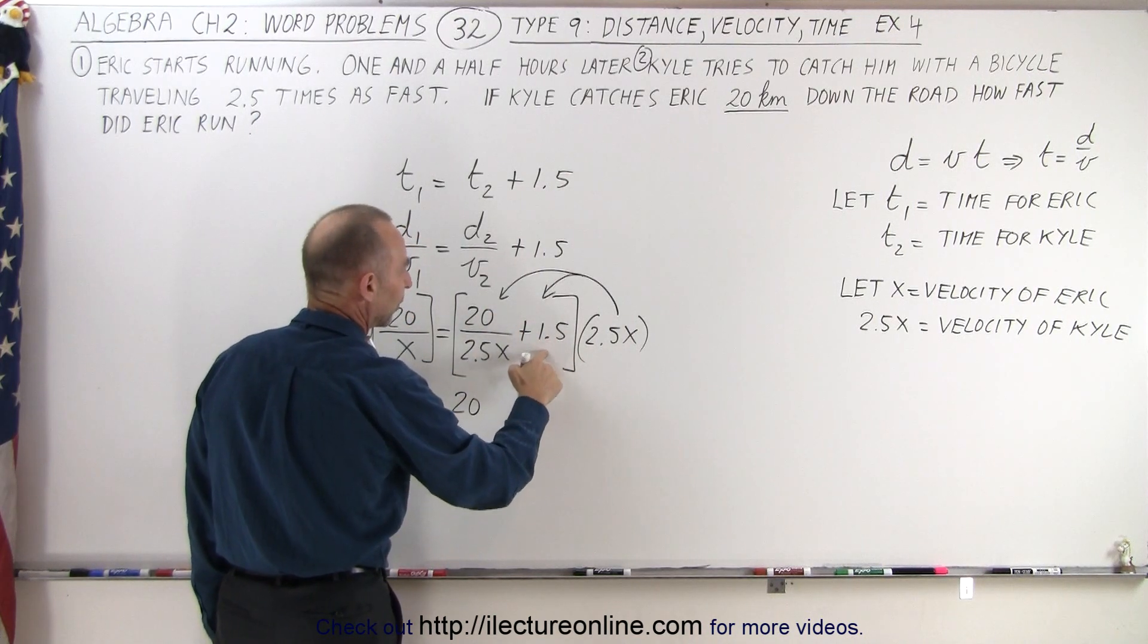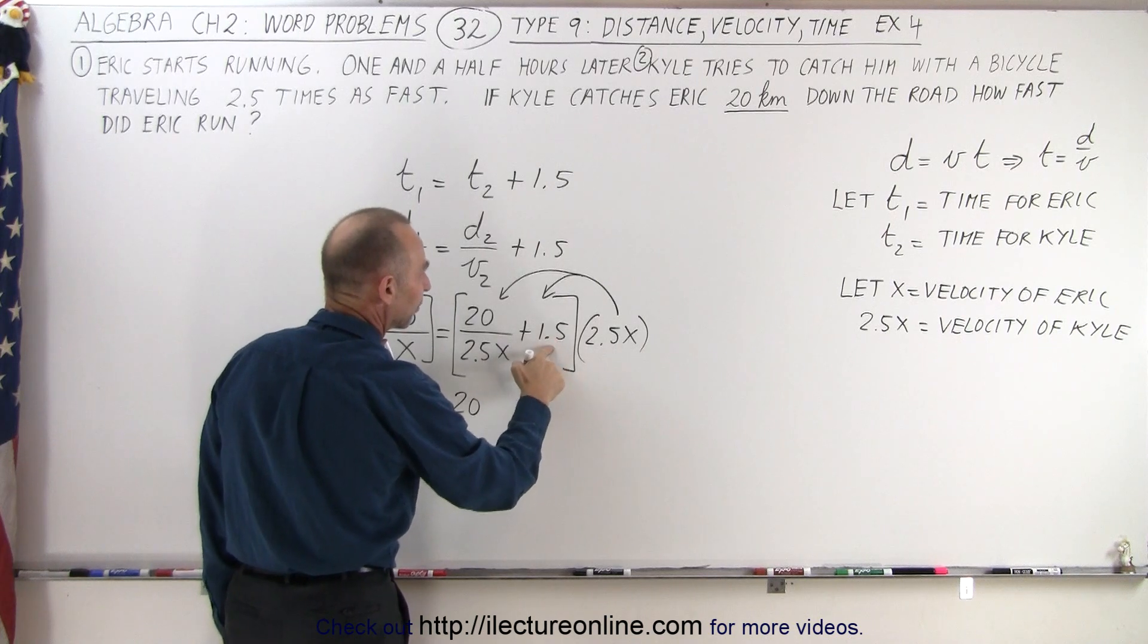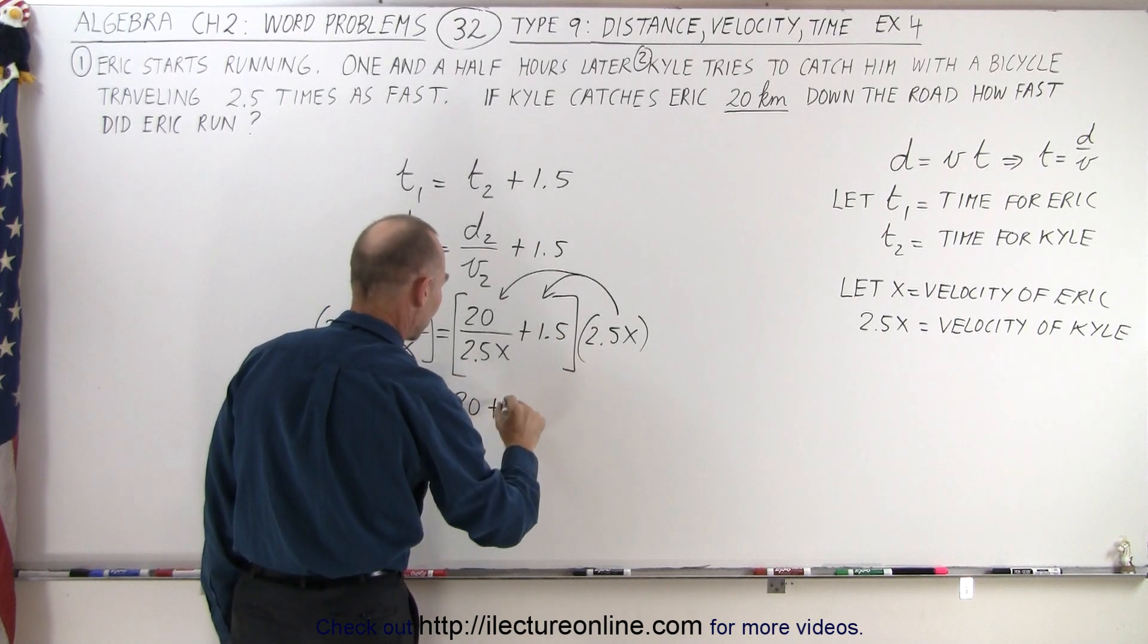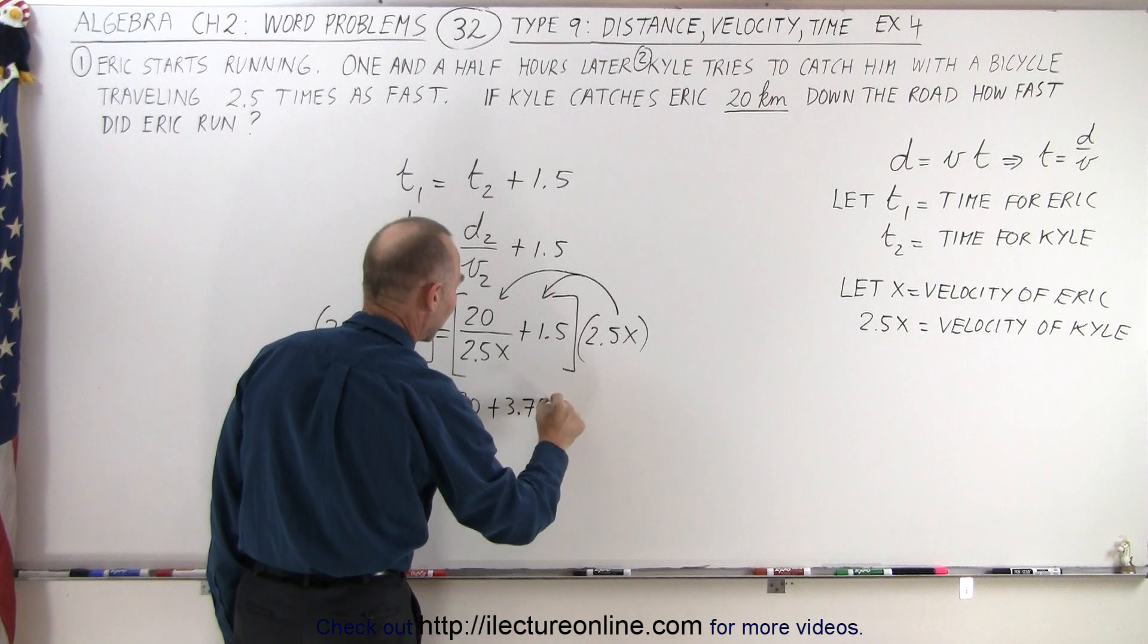On the second term we don't have anything to cancel out, so in that case it's going to be 1.5 times 2.5, which is 3.75 times x.